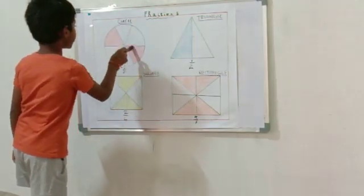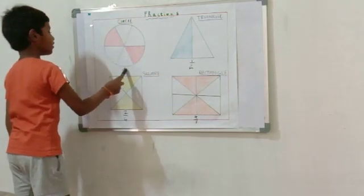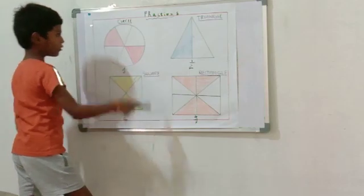Suthi is divided into 6 equal parts. 2 parts are shared. So the fraction of the shared parts are 4 by 6.